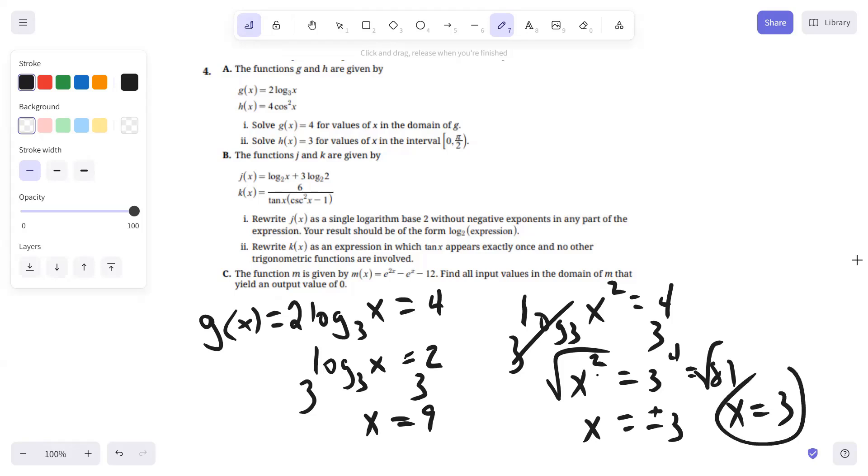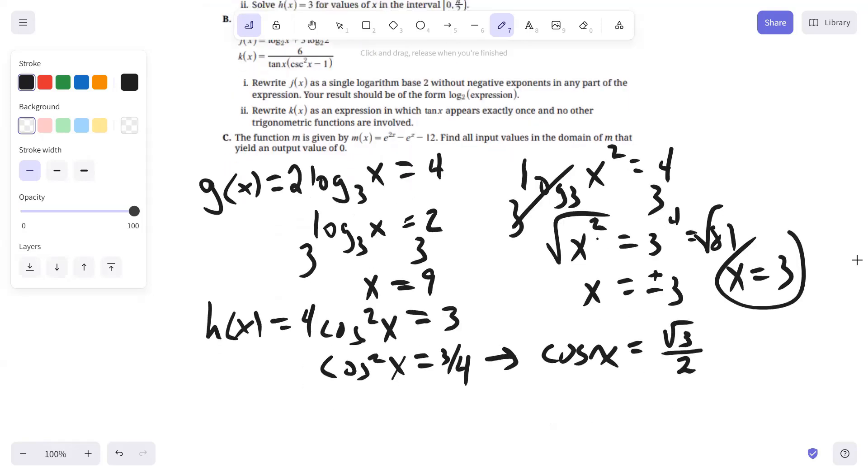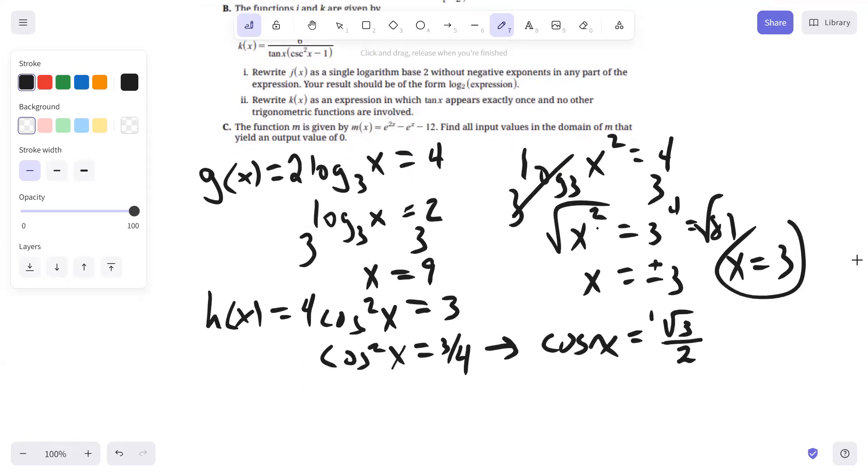Part two, solve H of X equals three for all X values in the interval zero to pi over two. So H of X equals four, cosine squared X equals three, first divide off the four. So cosine squared X equals three fourths, and then take the square root of both sides. So cosine X equals square root of three over two, plus or minus. So cosine of X equals square root of three over two. So that would be X equals pi over six, and also X equals 11 pi over six. But we're only going on the interval zero to pi over two.